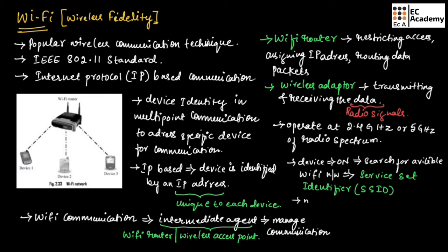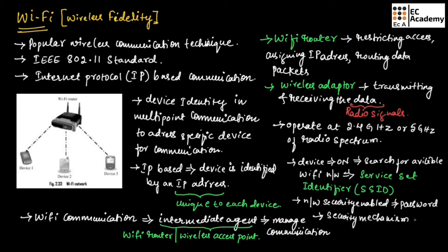If the network is security enabled, a password will be required to connect to a particular SSID. Wi-Fi uses different security mechanisms like WEP and WPA. WEP stands for Wired Equivalency Privacy and WPA stands for Wireless Protected Access. These are the different types of security mechanisms that Wi-Fi uses for securing data communication.